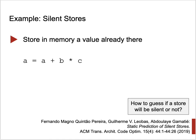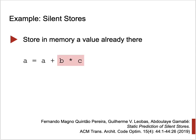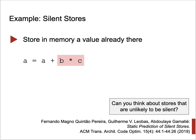Note that some store operations are more likely to be silent than others. For instance, in an operation like A = B * C, if either B or C is zero, you have a silent store — assuming A is a memory location. We can try to compute the probability that one of these values will be zero. On the other hand, an operation that increments a value and deposits it back where it was stored before can never be silent.